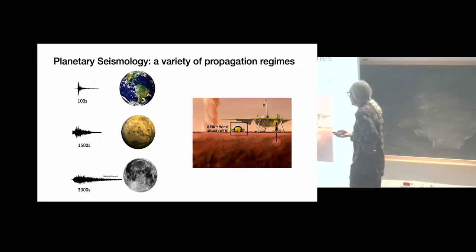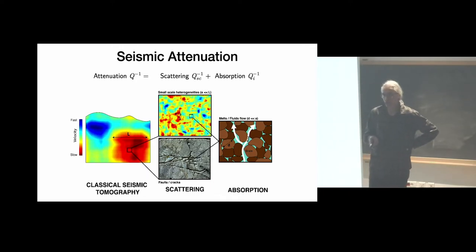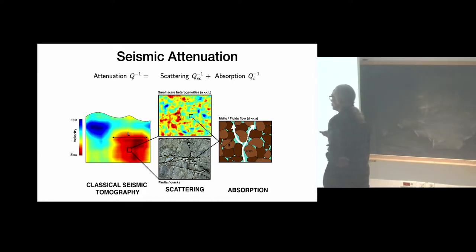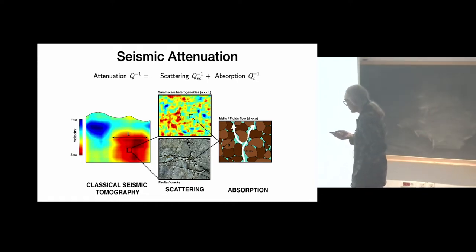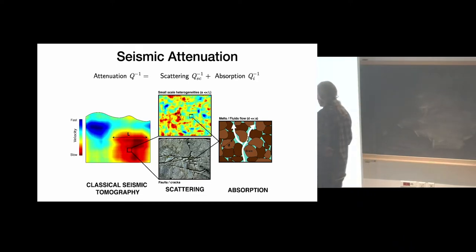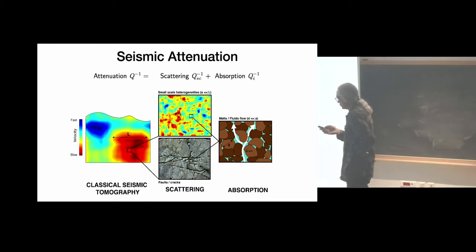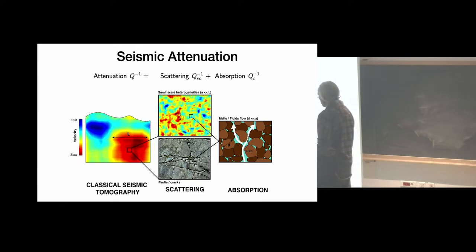What changes most between different planets is not so much the wave speed — the average wave speed in Mars's crust is not so different from the Moon or Earth. What changes a lot is the attenuation properties. Attenuation is an important component of seismology, particularly for seismic risk evaluation on Earth.